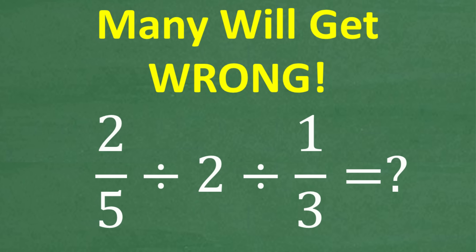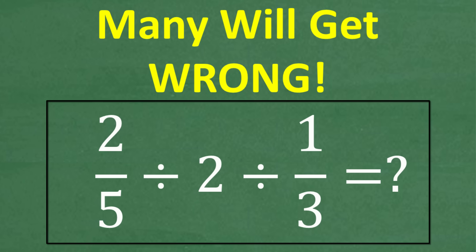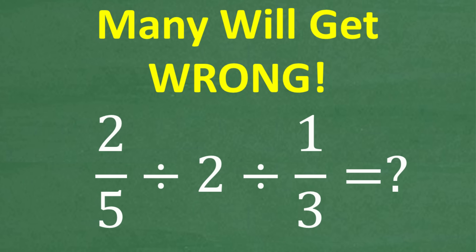So many of you are going to be shocked that you're going to get this basic math problem incorrect. The only rule here is you cannot use a calculator. Let's go ahead and take a look at the problem. We have two fifths divided by two divided by one third. If you want to take up this challenge, go ahead and put your answer in the comment section. I'll show you the correct answer in just one second, and then I'm going to fully explain the solution.